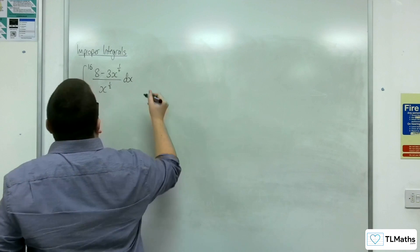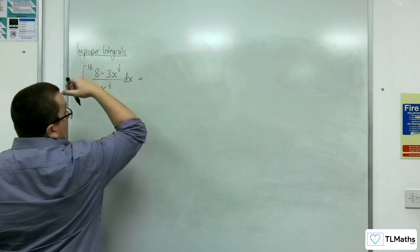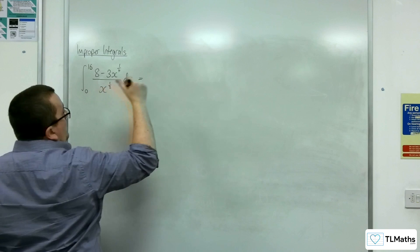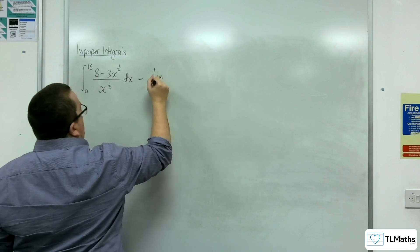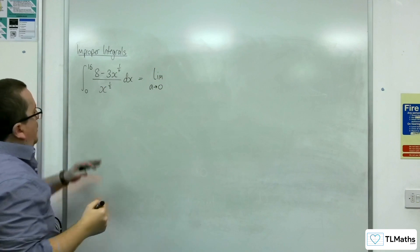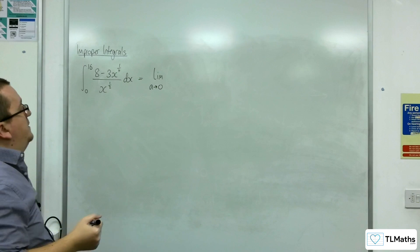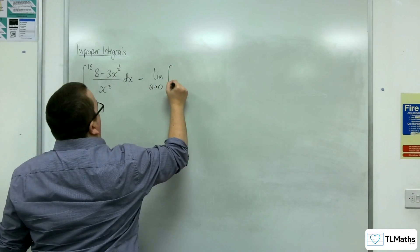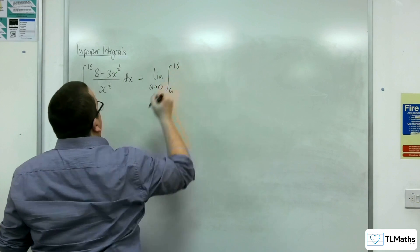Okay, so we're just going to write this as, well, let's write it with the limit. The limit as a tends to 0, because when x is 0, this is going to be undefined, of a to 16 of,